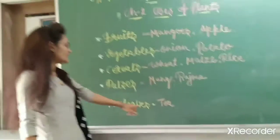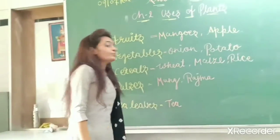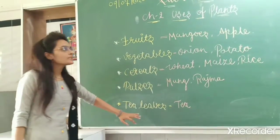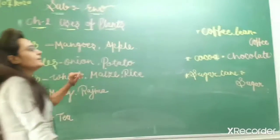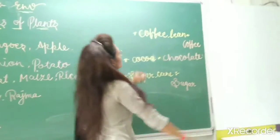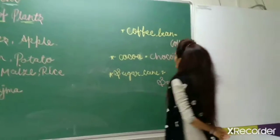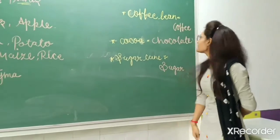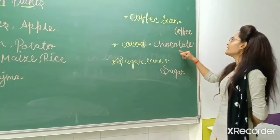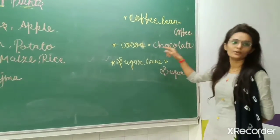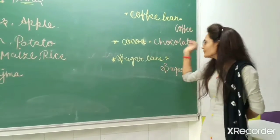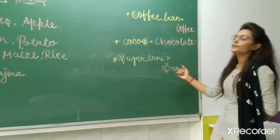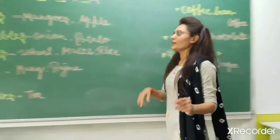Now next is tea. We get tea from tea leaves. We get coffee from coffee leaves. We get chocolate from cocoa. We get sugar from sugarcane.